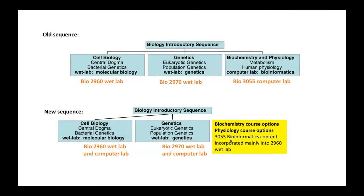In our introductory sequence we used to have a three-semester sequence: cell biology and introductory biochemistry with a wet lab, a genetics course second semester, and a third semester combining biochemistry and physiology with a computer-based lab. In the new sequence we've had for the last five years, we incorporated the computer component from that course mostly into the 2960 lab, adding computer components to the wet lab that freshmen take. The biochemistry and physiology components are now just upper level courses not considered part of the introductory sequence anymore.